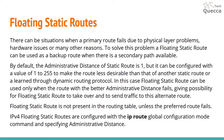By default, the administrative distance of a static route is 1, but it can be configured with a value of 1 to 255 to make the route less desirable than that of another static route or a route learned through a dynamic routing protocol. In this case, a floating static route can be used only when the route with the better administrative distance fails, giving the possibility for the static route to take over and send traffic to the alternate path.